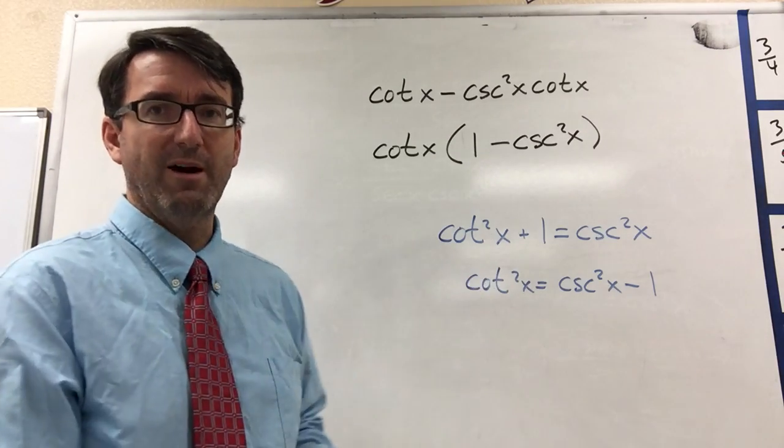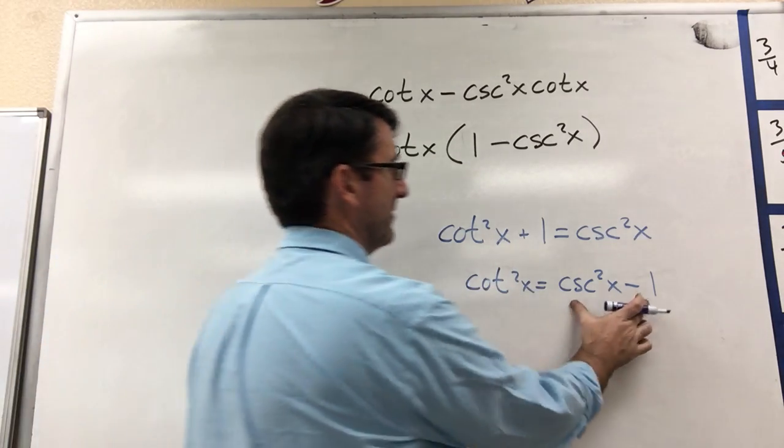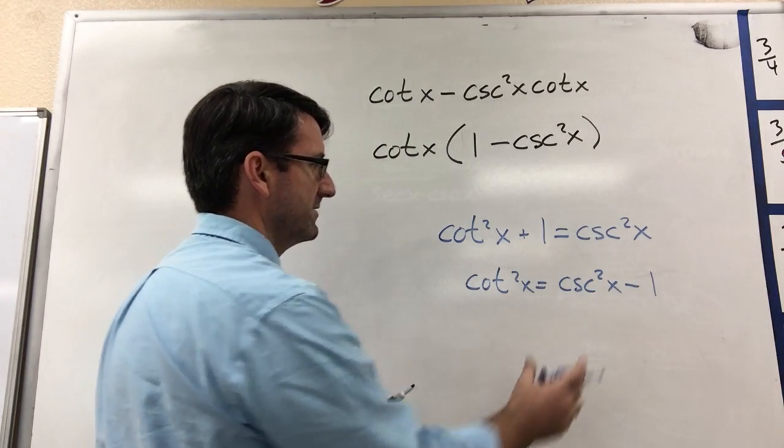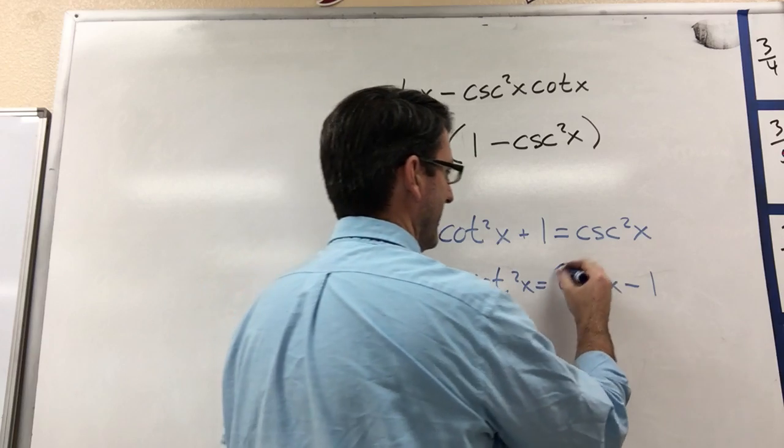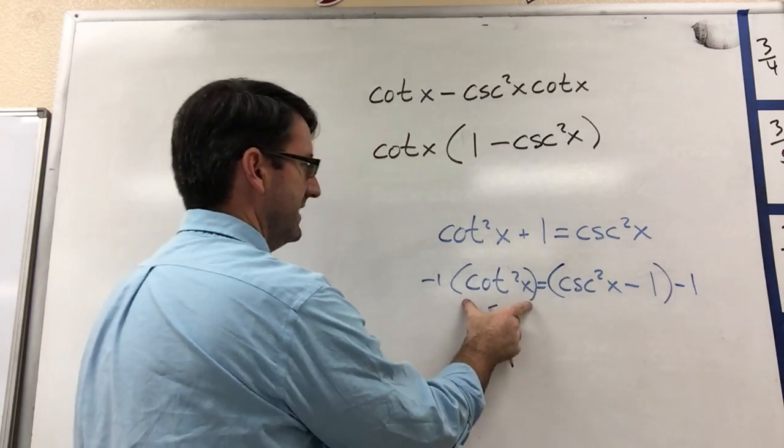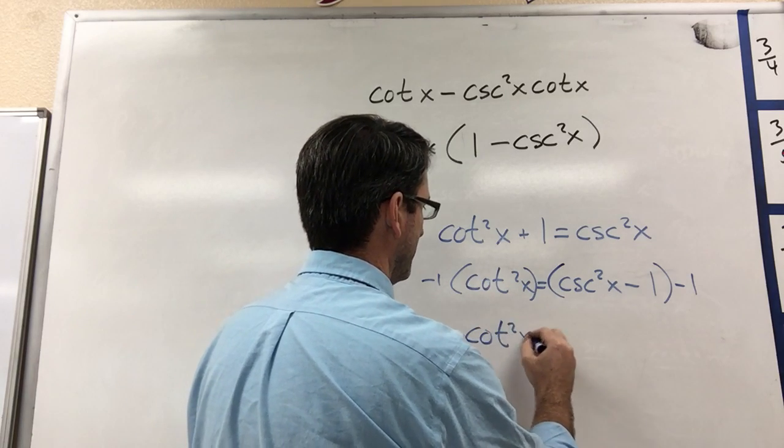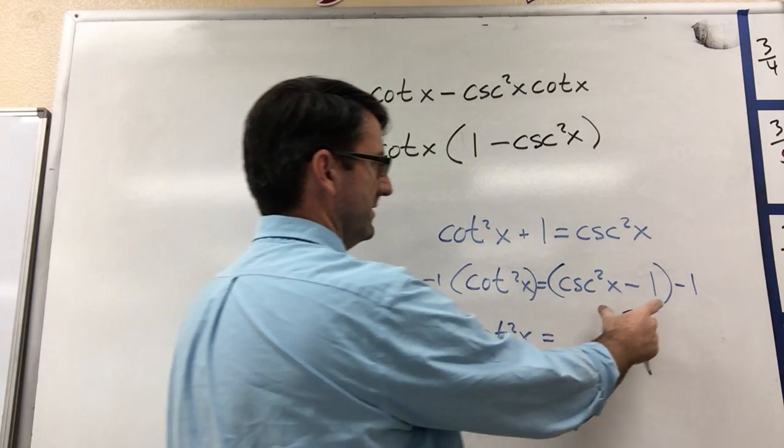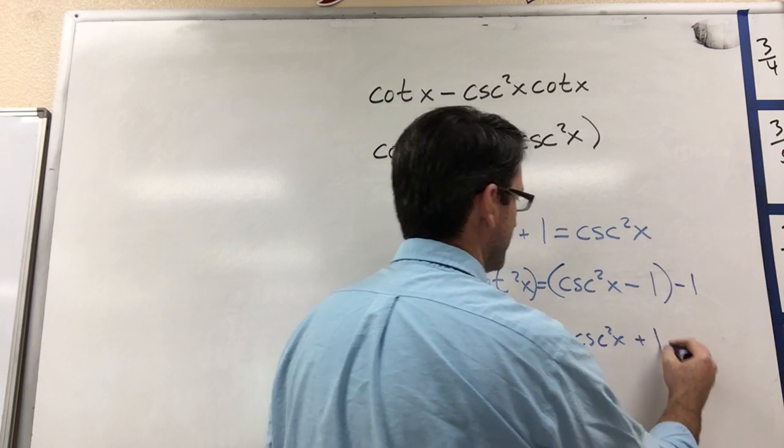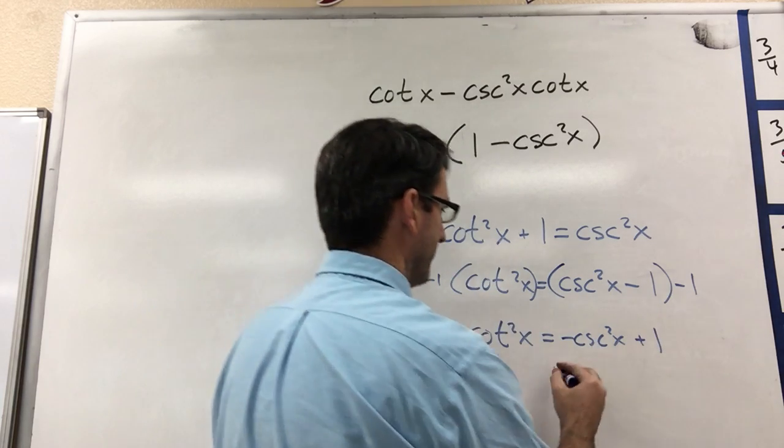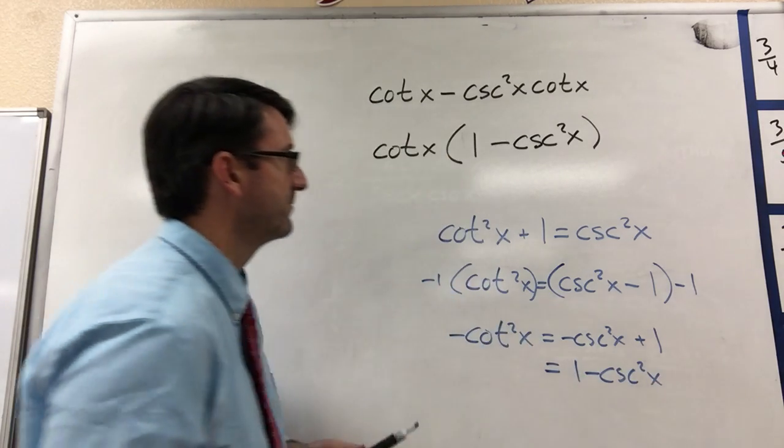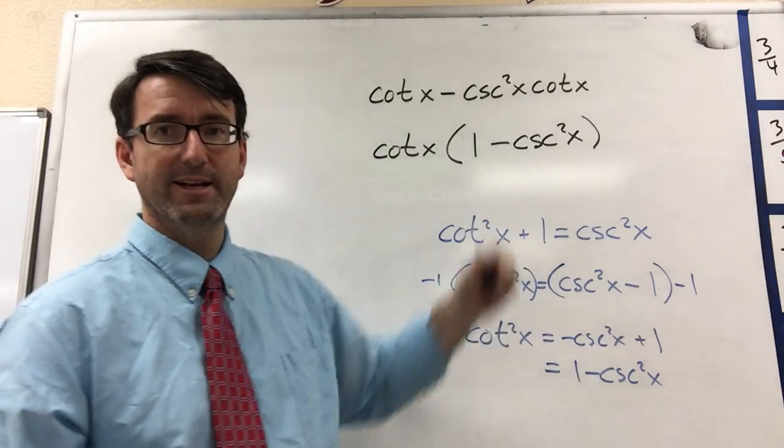So if we could flip those around, and we can flip them around just by multiplying this by negative 1. So if we multiply both sides of this equation by negative 1, then this would be negative cotangent squared x is equal to negative cosecant squared x plus 1. Or another way to write that is 1 minus cosecant squared x. And that is the identity that we want.